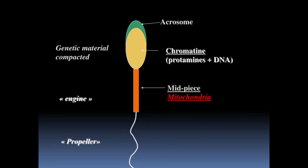The acrosome is a structure located at the tip of the head of a sperm cell. It is a specialized organelle composed of a single membrane-bound sac filled with enzymes. The enzymes stored in the acrosome are important for the fertilization process, as they help the sperm penetrate the outer layers of the female egg. The acrosome is formed during the final stages of sperm cell development and is derived from the Golgi apparatus, playing a crucial role in successful fertilization.